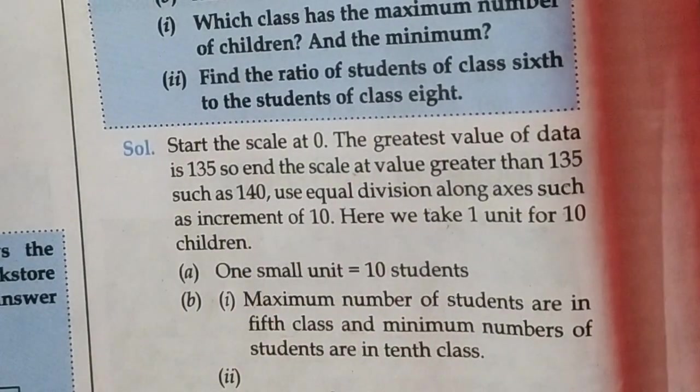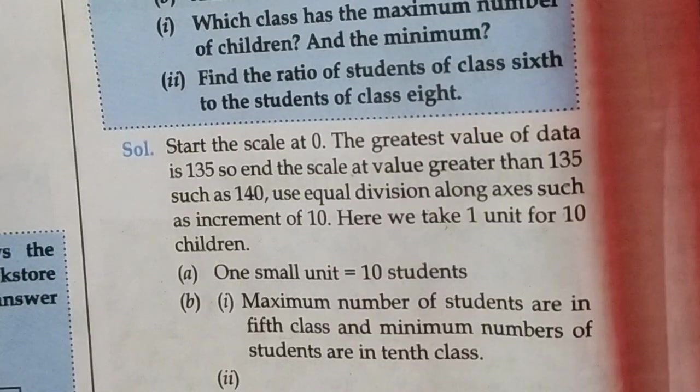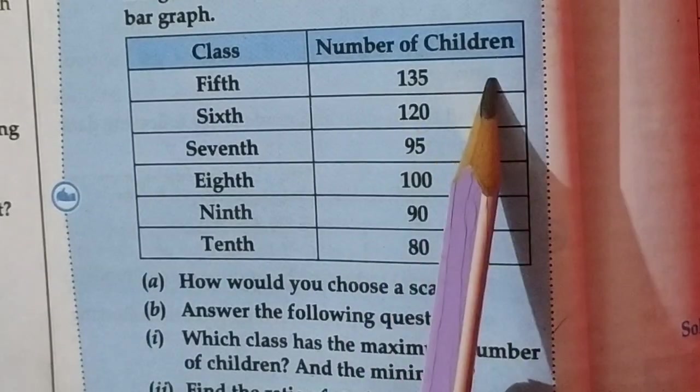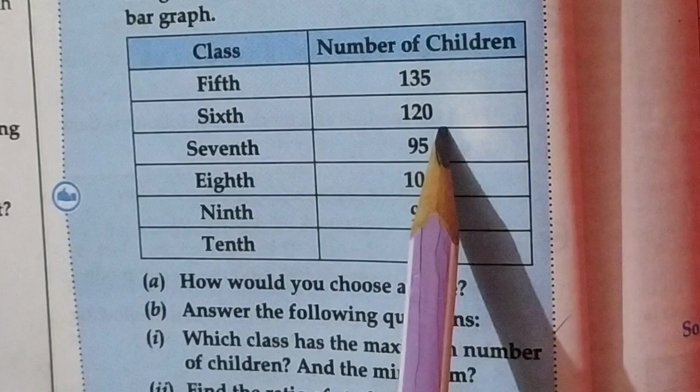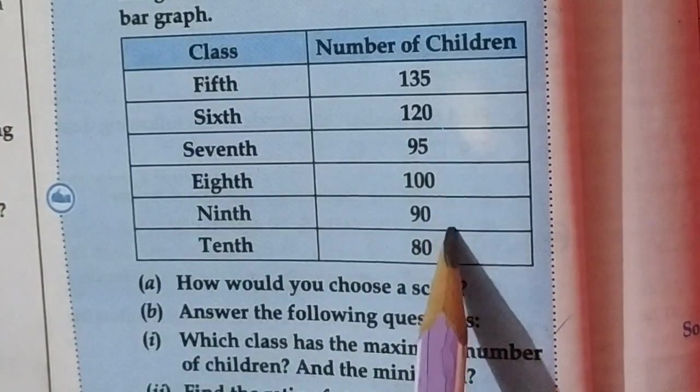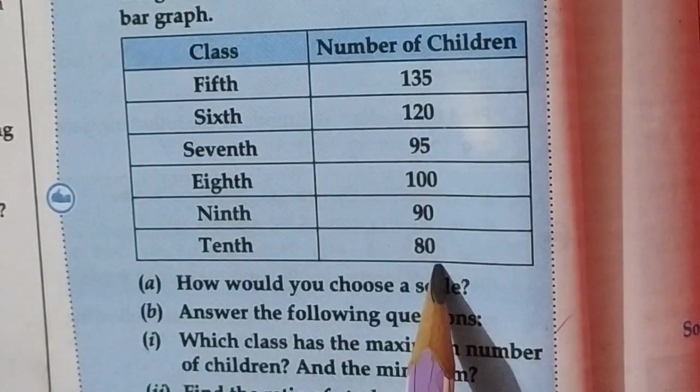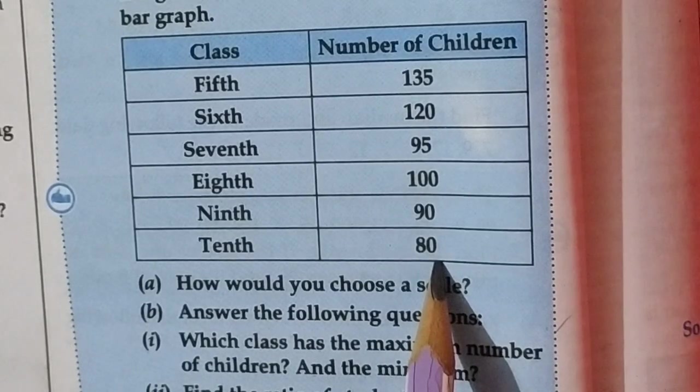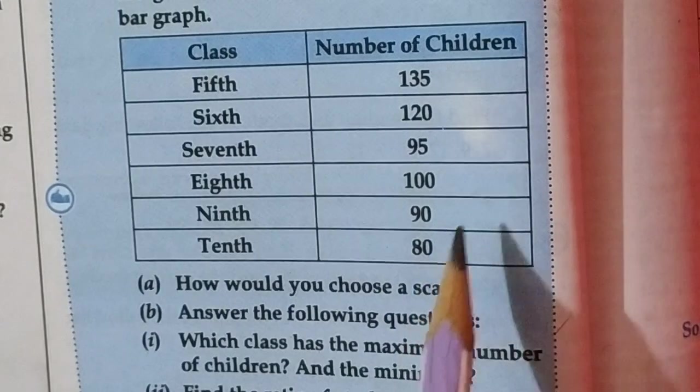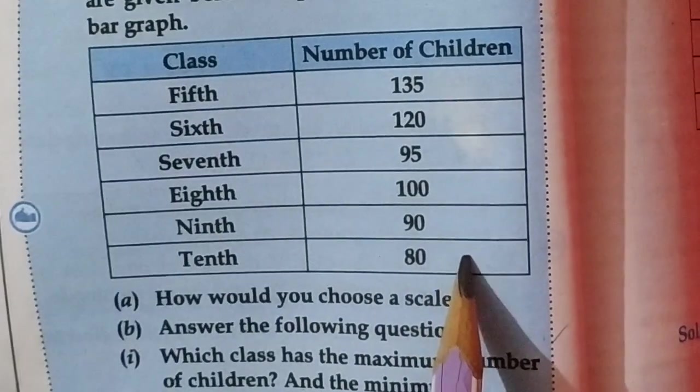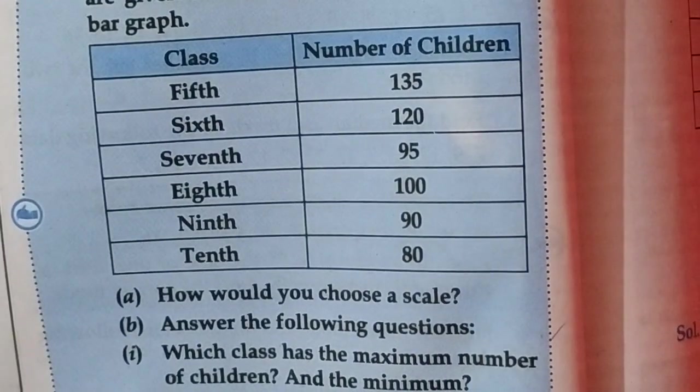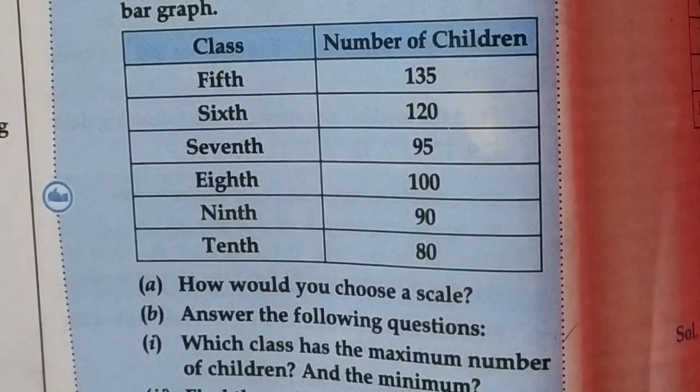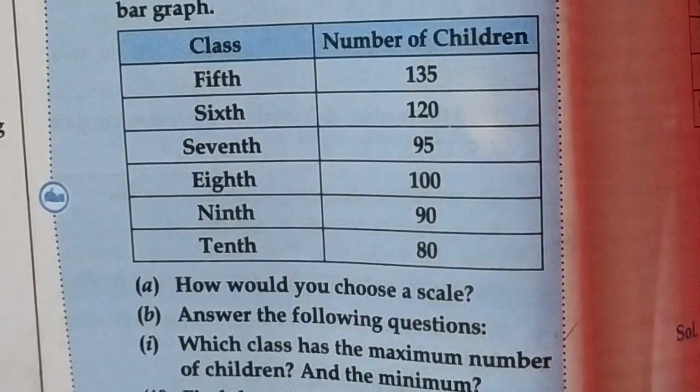Why students have we taken this measurement, 1 unit for 10 children? Because it is the perfect scale for this graph. How? So look, first of all students, look at the numbers of children: 135, 120, 95, 100, 90 and 80. So if we take 5-5, it will go so lengthy. It will be a big bar graph. And if we take the distance of 10-10, it will be the proper scale for the given graph.